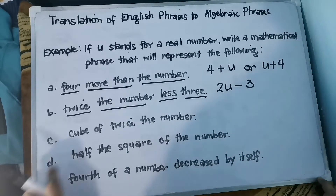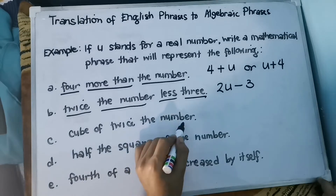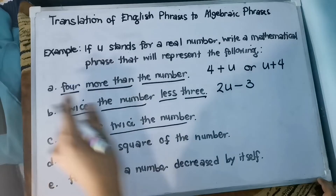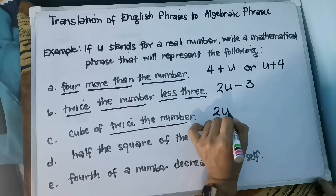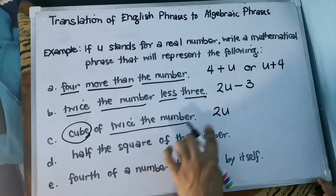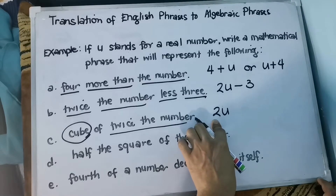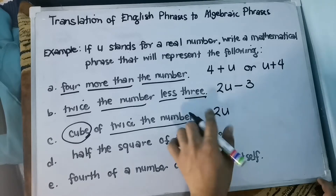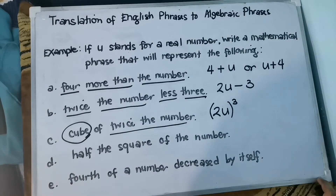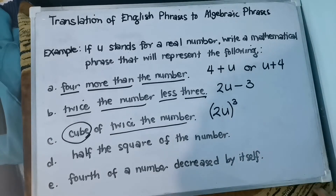For letter C, we have: cube of twice the number. We start with twice the number, which is 2u just like in example B. Then cube means we multiply 2u by itself three times, so it involves an exponent. We put it in parentheses and raise it to the third power: (2u)³.